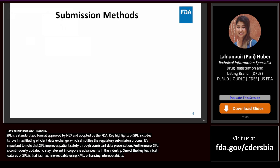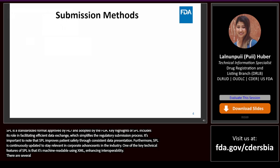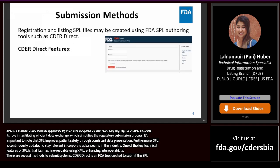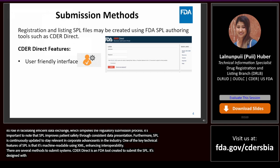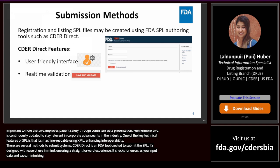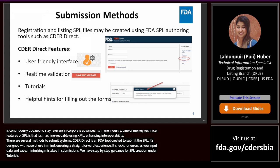There are several methods to submit SPLs. CDER Direct is an FDA tool created to submit the SPL. It's designed with ease of use in mind, ensuring a straightforward experience. It checks for errors as you input data and save, minimizing mistakes in submissions. We have step-by-step guidance for SPL creation under tutorials and helpful hints which provide tips to aid in completing the forms.